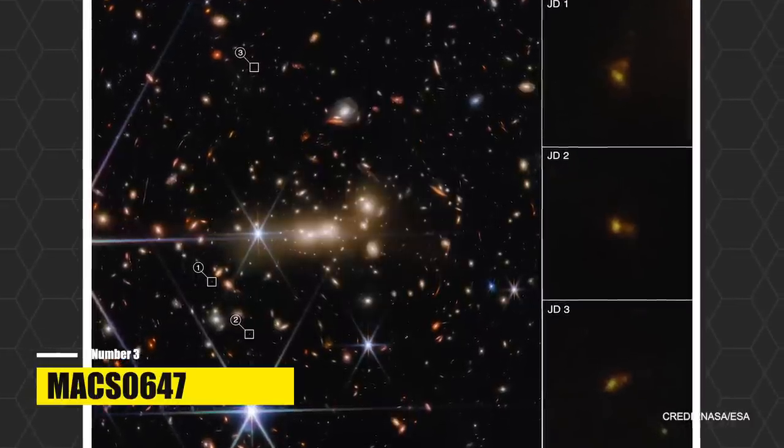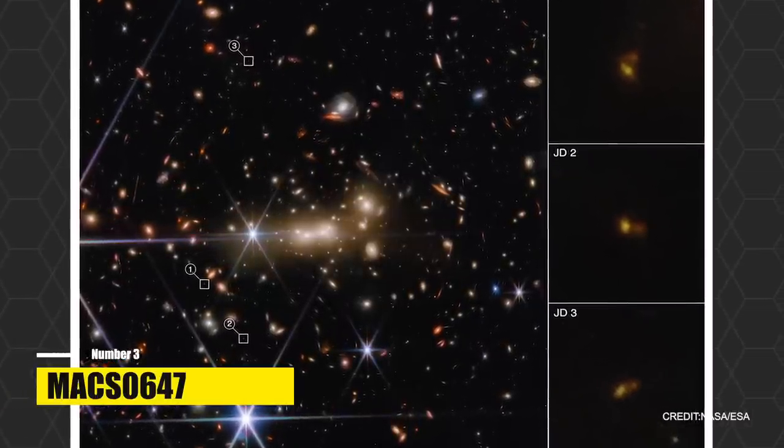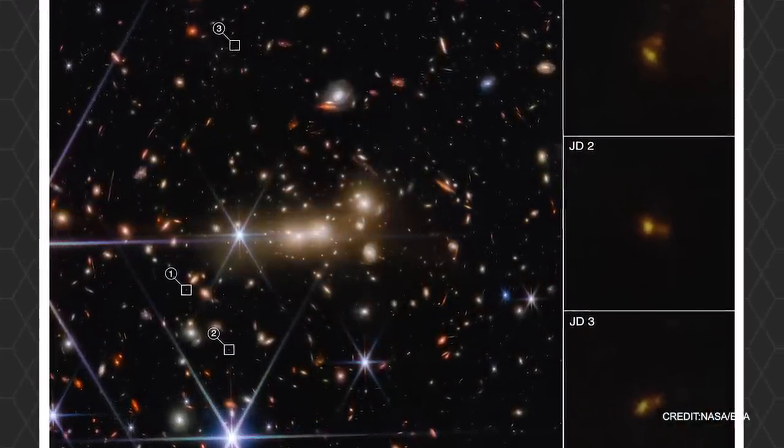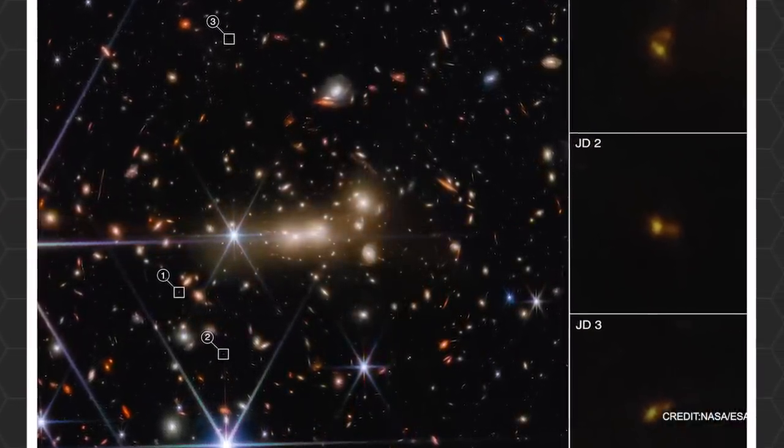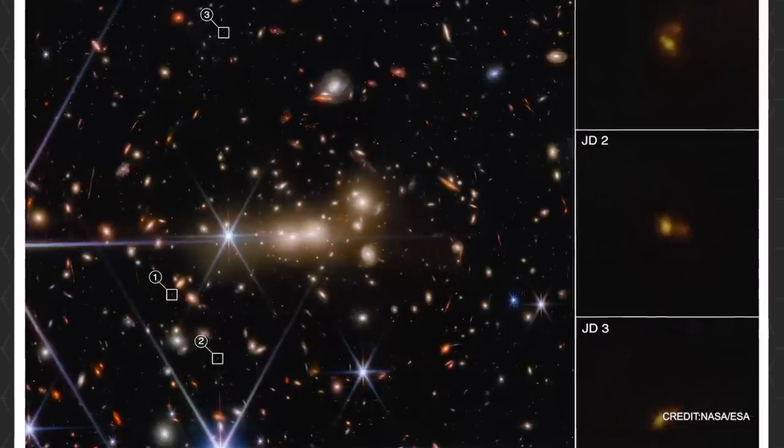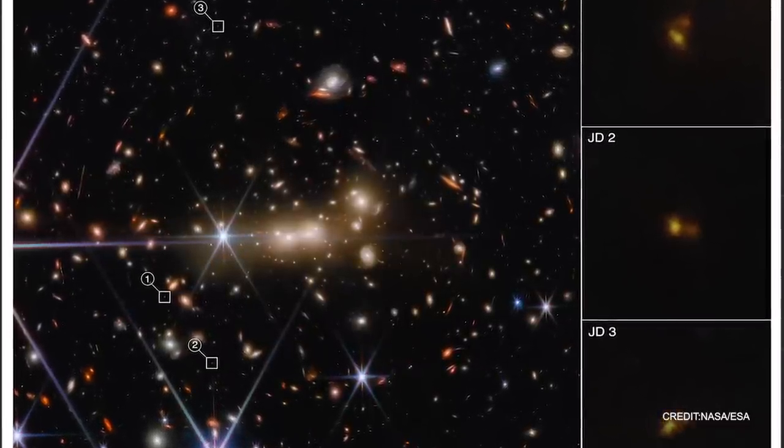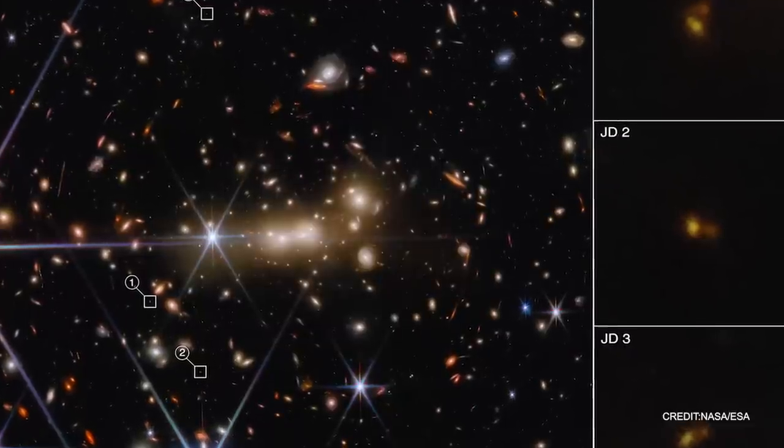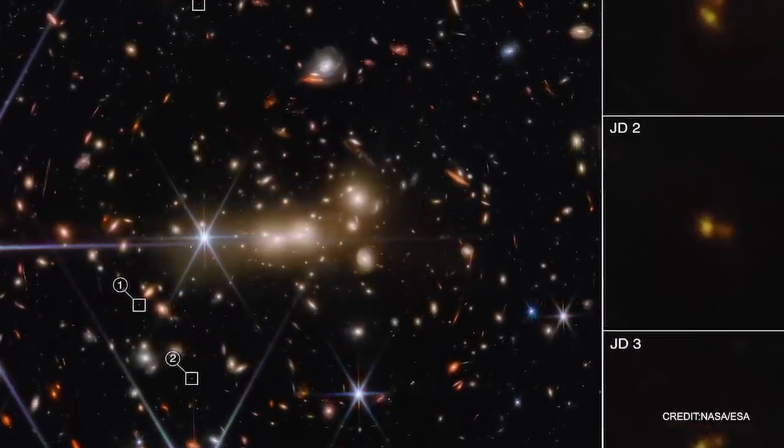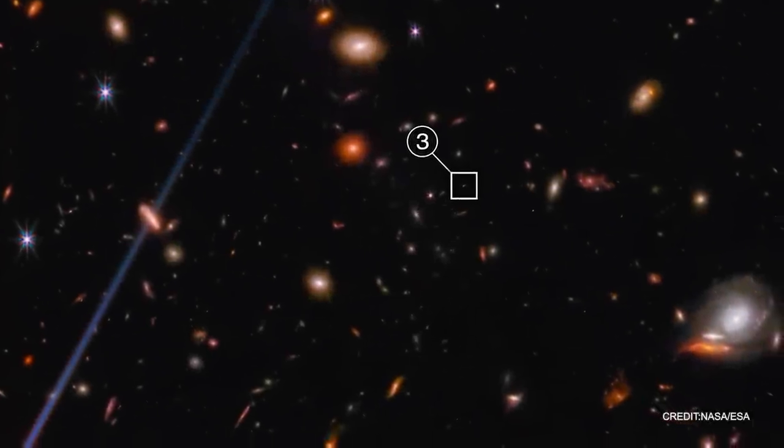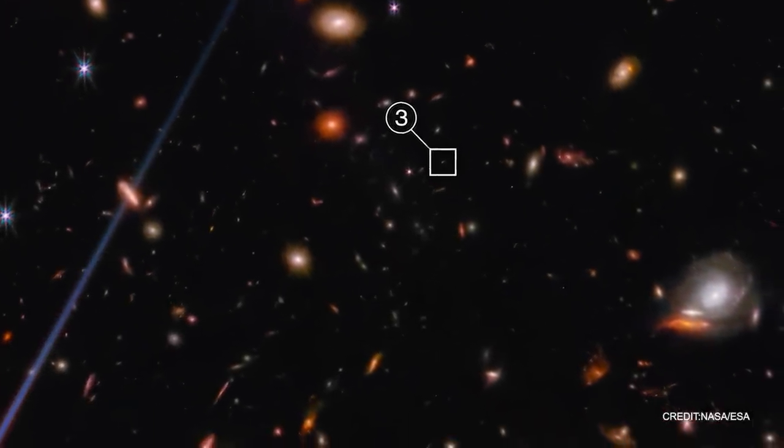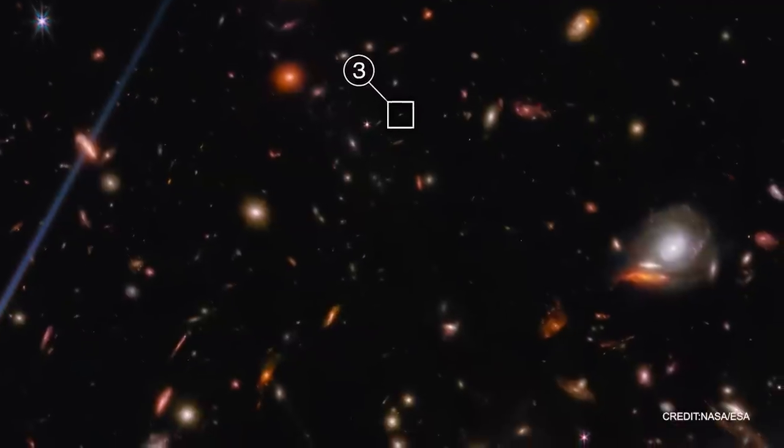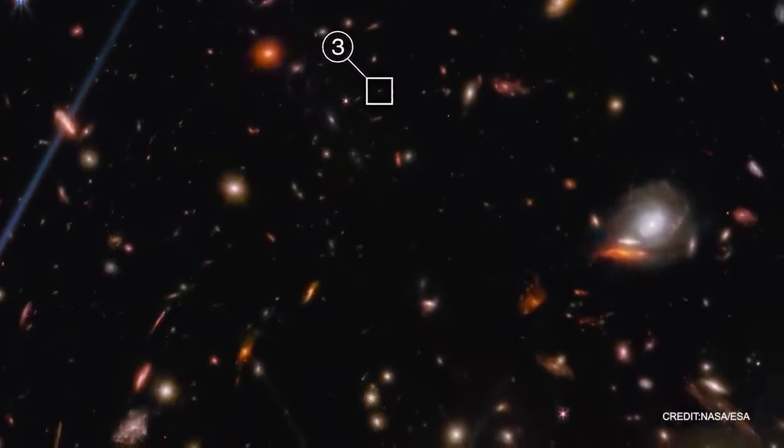Prepare to journey into the intriguing world of galaxy cluster MACS 0647. This is not an ordinary cluster. In fact, the gravitational force it exerts is so immense that it operates like a colossal cosmic lens. But what exactly does that mean? To explain, consider a simple magnifying glass. It bends and enlarges the light coming from an object, making the object appear larger. MACS 0647 does something similar, but on a much grander scale. Its massive gravity bends and magnifies the light from more distant cosmic systems, such as the MACS 0647JD.